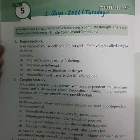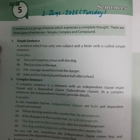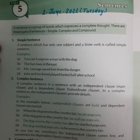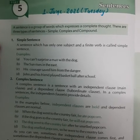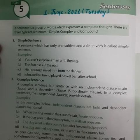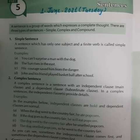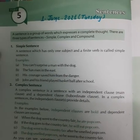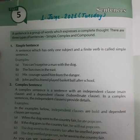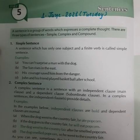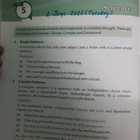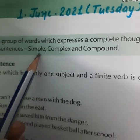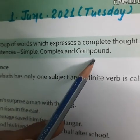Hello everyone. In today's video we are going to study about the types of sentences. We are already done with what a sentence is and its kinds in the first chapter of our English grammar. So today we will learn about the types of sentences. There are basically three types of sentences: simple, complex, and compound.